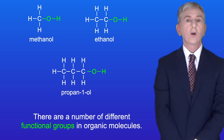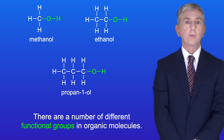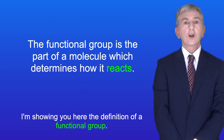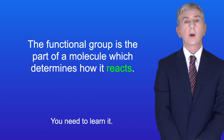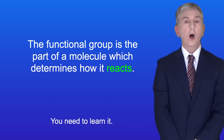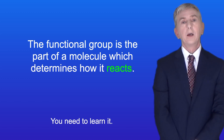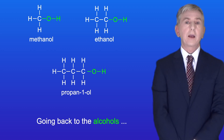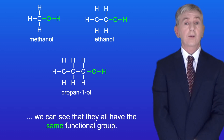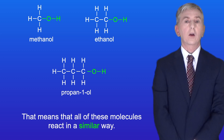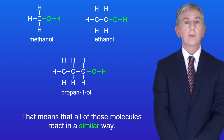Scientists refer to the alcohol group as the functional group. There are a number of different functional groups in organic molecules and we'll be looking at some of them later. The definition of a functional group is: the functional group is the part of a molecule which determines how it reacts. Going back to the alcohols, we can see that they all have the same functional group, and that means that all of these molecules react in a similar way.